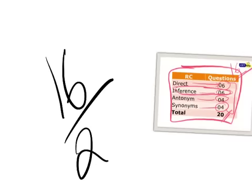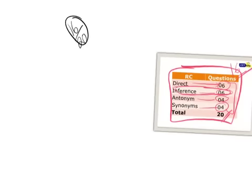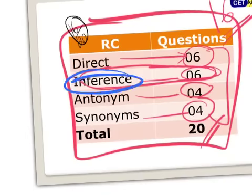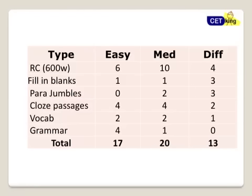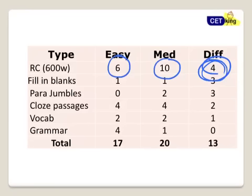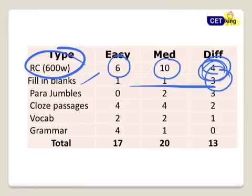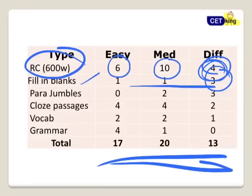About RC specifically — out of 20 questions, 6 questions were direct easy questions. Inference based questions — 6. Semi-inference based — 4. So out of these, only 6 questions are difficult. Remaining 16 questions are no problem — so target at least those questions. Why leave the complete section because of that? We can target 16 out of 20 questions on RC. Overall verbal section: 17 easy, 20 medium, 13 difficult. RC — 6 easy, 10 medium, 4 difficult. Fill in the blanks — again medium on average, and last year's fill in the blanks were very very difficult. RC is almost 600 words on average.